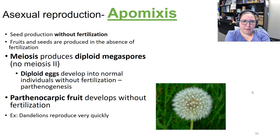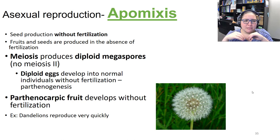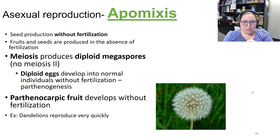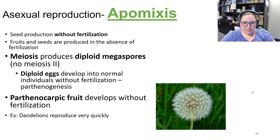Apomixis is seed production without fertilization — fruits and seeds produced in the absence of fertilization. In this case, meiosis produces diploid megaspores rather than haploid ones, which then leads to diploid eggs that develop into normal individuals without fertilization, producing parthenocarpic fruit. The dandelion is a good example — if you've ever tried to fight dandelions, you know they reproduce very quickly, partly because of apomixis.